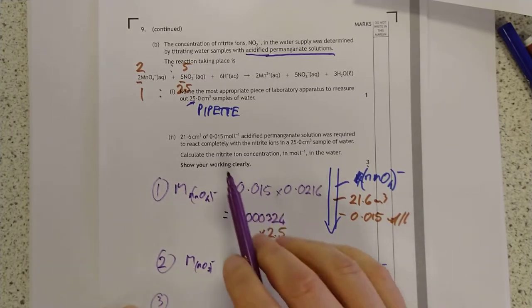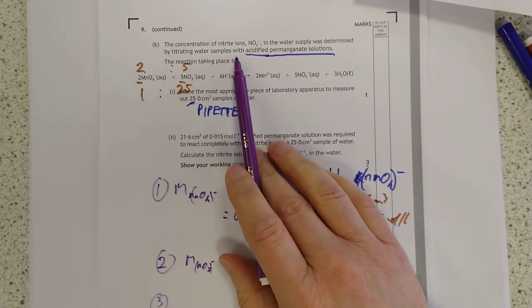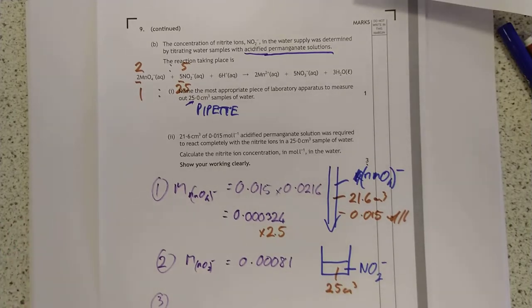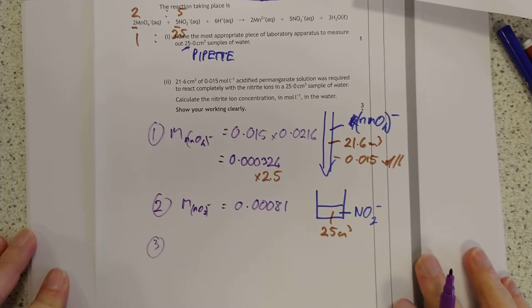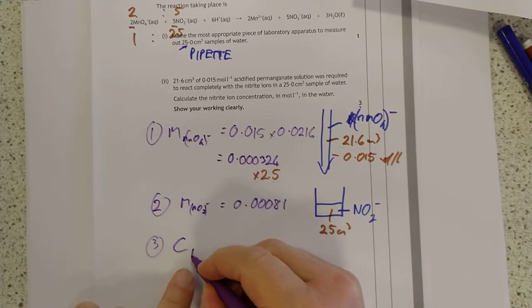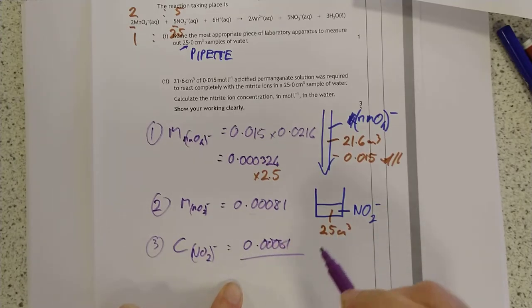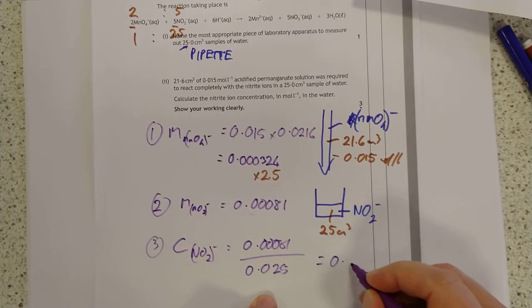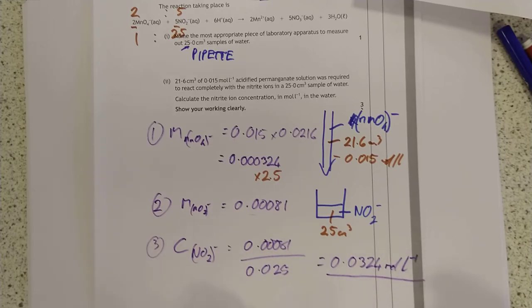So, stage two, the moles of the NO2 minus is 0.00081. Excellent. Stage three, I haven't actually found what they're wanting me to work out yet. It would help if I read the question. Calculate the concentration in moles per liter. Was there anything odd done to this? Let me just go back and check for a dilution anywhere. No. Okay. In that case, calculate whatever the question's actually asking for. So, concentration of NO2, the nitrite, is moles over volume, which is this, which is our moles, 0.00081 over the volume was 25 over 1,000, so 0.025. And divide by 0.025 gives us 0.0324.